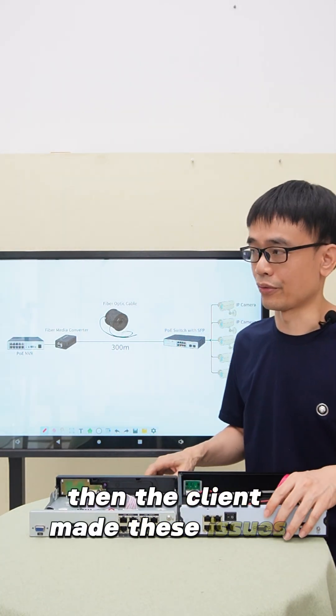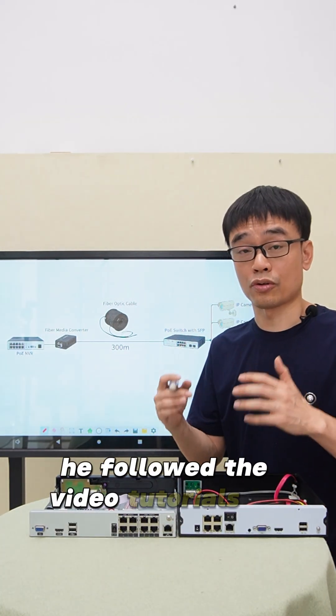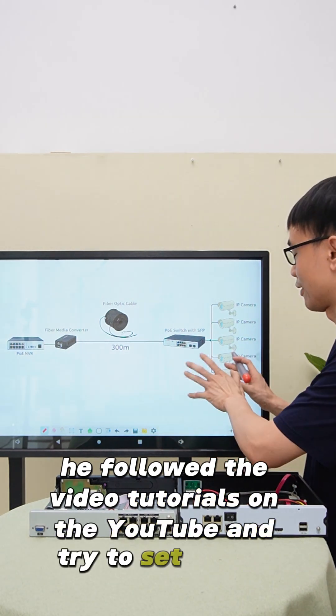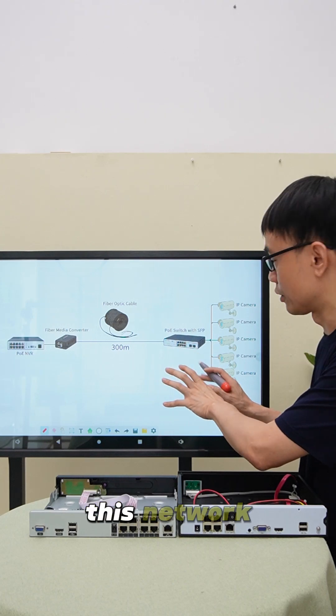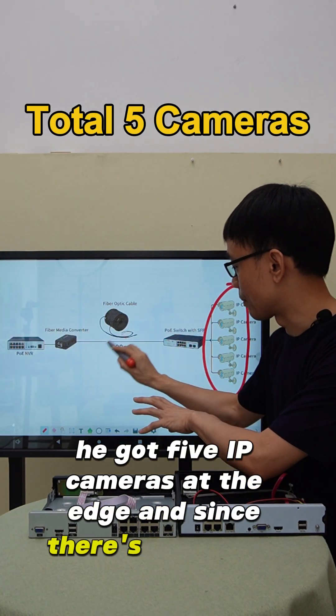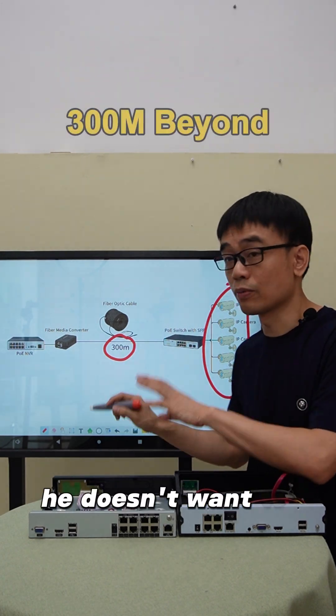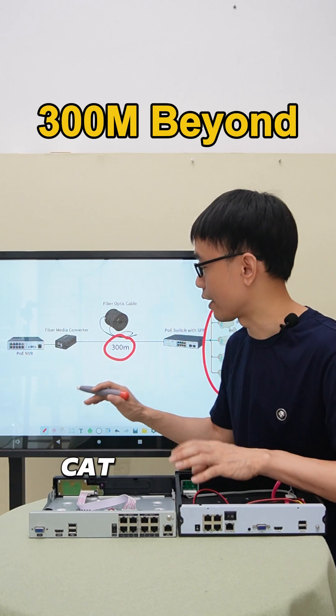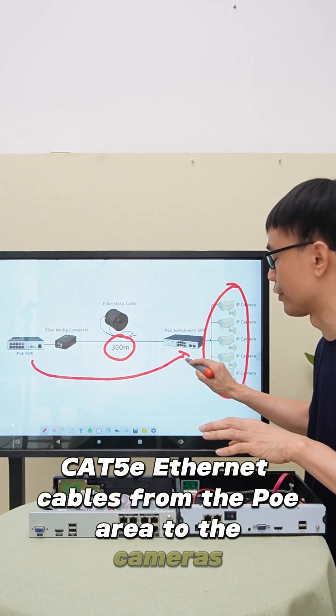Then the client had this issue. He followed video tutorials on YouTube and tried to set up this network. He got five IP cameras at the edge. And since there's about 300 meters distance, he doesn't want to pull five Ethernet cables from the PoE NVR to the cameras.